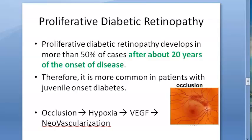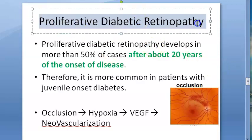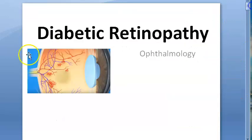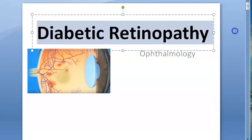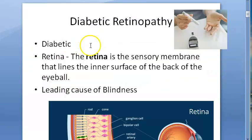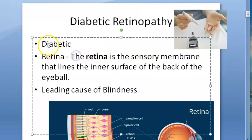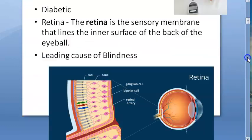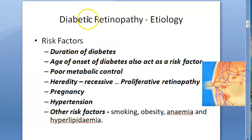In this video, let us look at proliferative diabetic retinopathy, or PDR. First, let's take a recap of where we are — we are looking at diabetic retinopathy in ophthalmology. Diabetes causes hyperglycemia, and the retina is the sensory membrane that lines the inner surface of the back of the eyeball. This is one of the leading causes of blindness.